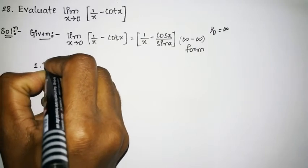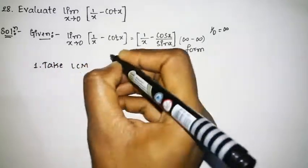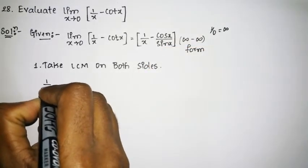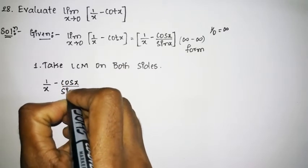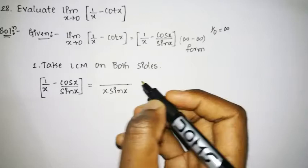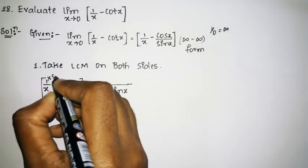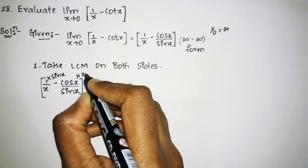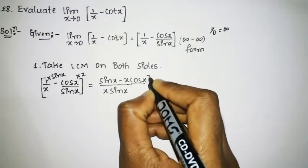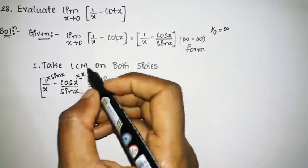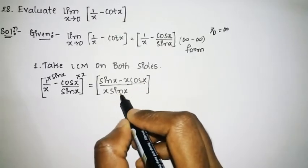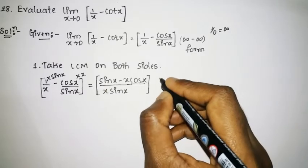So our first step is to take the LCM on both sides. The equation is 1 divided by x minus cos x divided by sin x. The LCM will be x times sin x. At the first term the denominator has x but no sin x, so multiply by sin x, giving sin x. The second term multiplies by x, giving x times cos x. So the numerator becomes sin x minus x·cos x, over x·sin x. Substituting x = 0: sin 0 = 0, so the numerator is 0, and the denominator x·sin x = 0·0 = 0. So this is the 0 by 0 form.